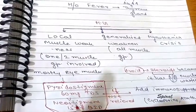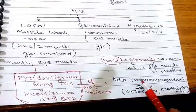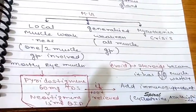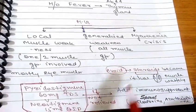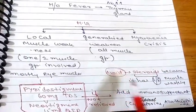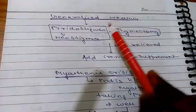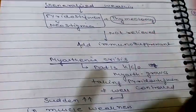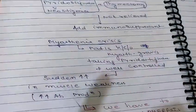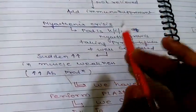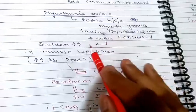Myasthenia gravis is of three types: localized muscle weakness — one or two muscle groups involved, mainly eye muscles; generalized weakness — all muscle groups involved; and myasthenia crisis. For localized muscle weakness we give pyridostigmine 60 mg and neostigmine 50 mg. If not relieved, we add immunosuppressants such as cyclosporine or azathioprine to decrease antibody formation. Important: avoid steroids because steroids have the side effect of muscle wasting. For generalized weakness, we give pyridostigmine, neostigmine, plus perform thymectomy. If not relieved, add immunosuppressants.